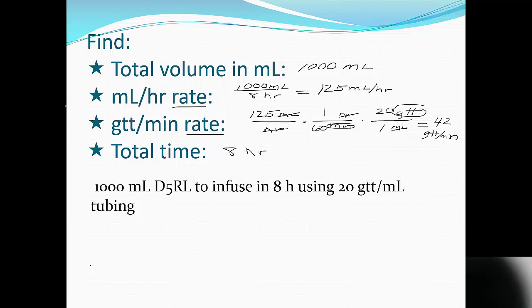So key thing from these is that these two rates are just two different ways of describing how fast the IV is running, and so if I know one of them, I can always use my dimensional analysis to convert to the other one. So let's take a look at another example.